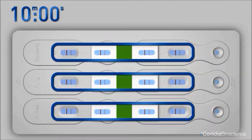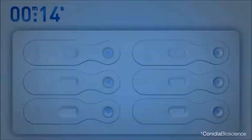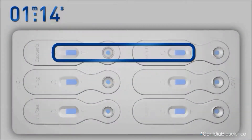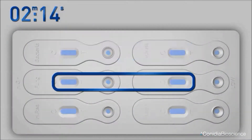Six control lines and six test lines would indicate a negative or negligible result. This means that any contamination present within the sample is at a level below the threshold of the test.